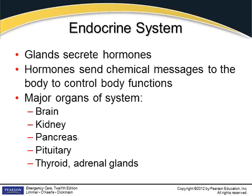The endocrine system is a system of glands that secrete hormones — chemical messengers that control body functions. The major organs involved include the brain, pancreas, pituitary, kidneys, thyroid, and adrenal glands. Too many or too few hormones will cause certain types of disease processes to occur.